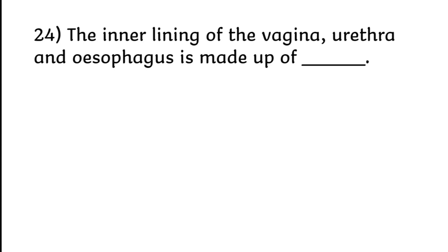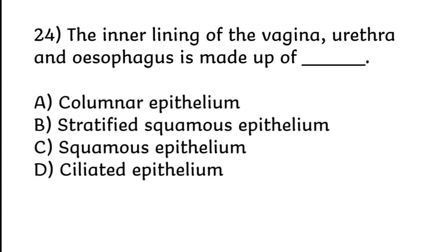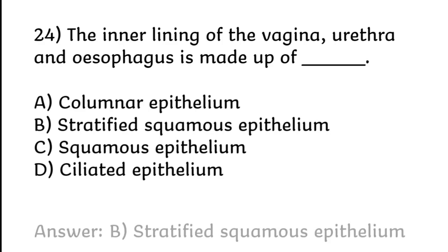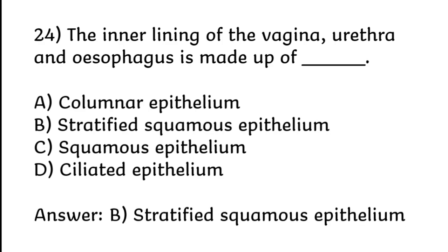The inner lining of the vagina, urethra, and esophagus is made up of columnar epithelium, stratified squamous epithelium, squamous epithelium, or ciliated epithelium. Correct answer is option B, stratified squamous epithelium.